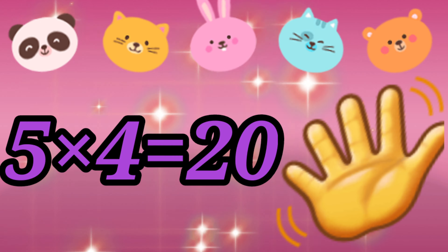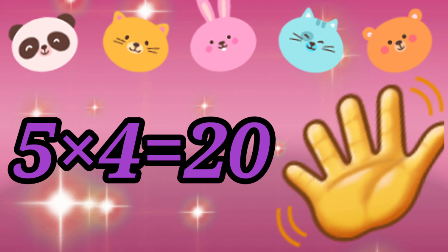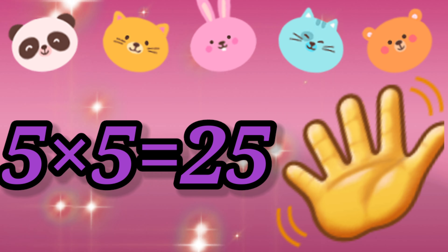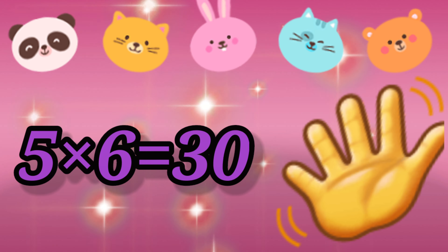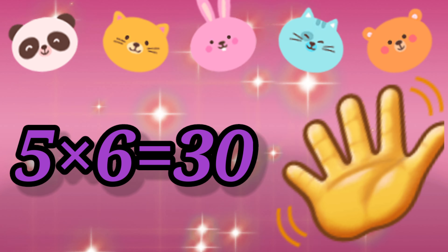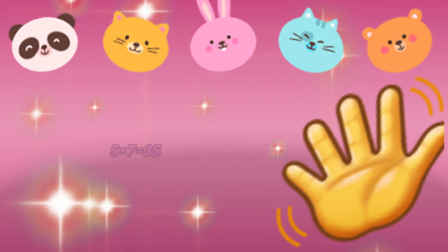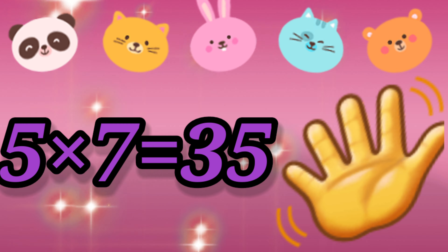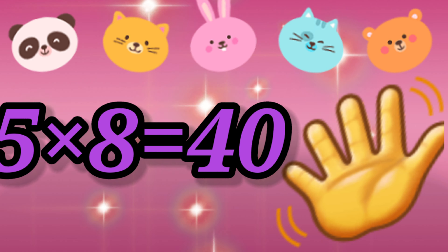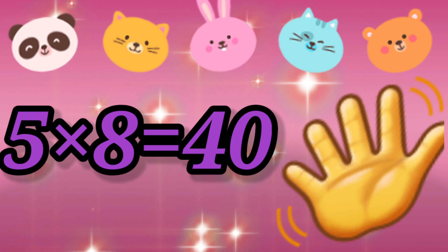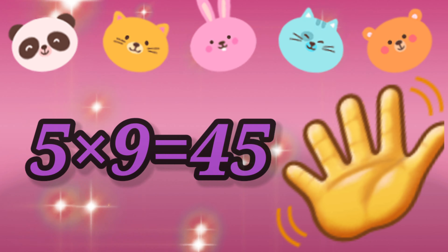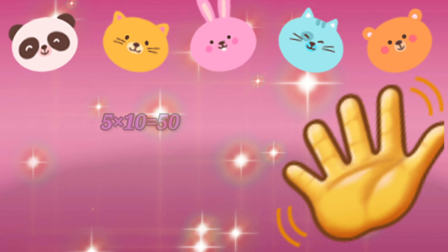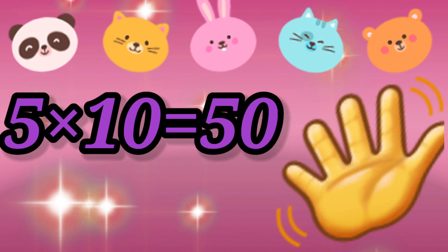5 times 5 is 25. 5 times 6 is 30. 5 times 7 is 35. 5 times 9 is 45. 5 times 10 is 50.